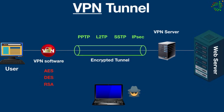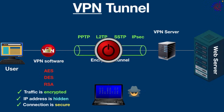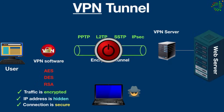A VPN tunnel ensures three things: traffic is encrypted, the IP address is hidden, and the connection is secure. It is also important to note that a VPN tunnel includes safeguards such as a kill switch, which stops traffic if the VPN connection drops. This prevents the user's public IP address from becoming visible, maintaining the integrity of the secure tunnel.